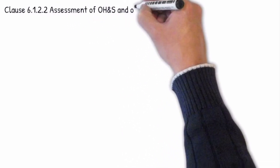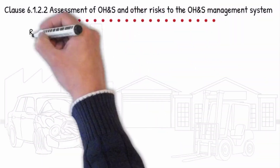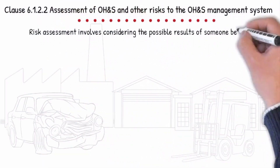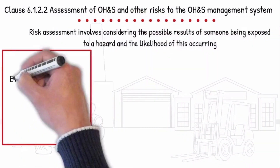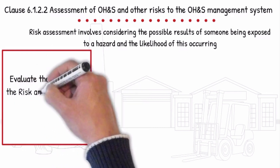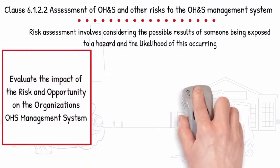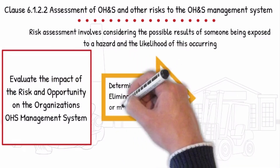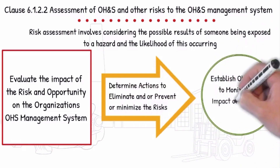Clause 6.1.2.2 — Assessment of OH&S and other risks to the OH&S management system. Risk assessment involves considering the possible results of someone being exposed to a hazard and the likelihood of this occurring. Evaluate the impact of the risk and opportunity on the organization's OH&S management system. Determine actions to eliminate and/or prevent or minimize the risks, and establish objectives to monitor the impact of the risks.